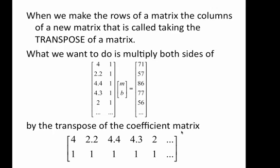When we make the rows of a matrix, the columns of a new matrix, we call it the transpose. So, what we do is we take the rows of the matrix and turn it into columns. Or you could say, take the columns and turn them into rows.